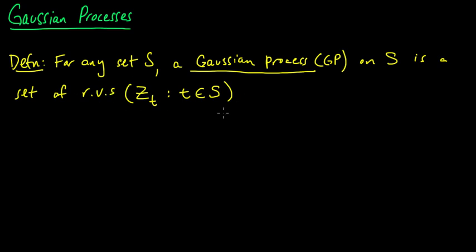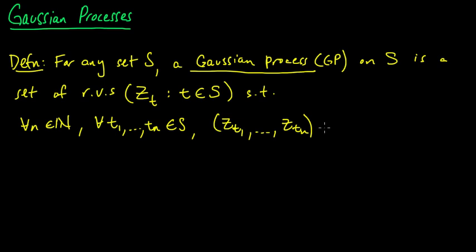It's a set of random variables such that for any n and for any t1 up to tn in S, the vector (Z_t1, ..., Z_tn) is Gaussian distributed. Whenever we say a vector is Gaussian, we mean it's multivariate Gaussian. These are called the finite dimensional distributions.